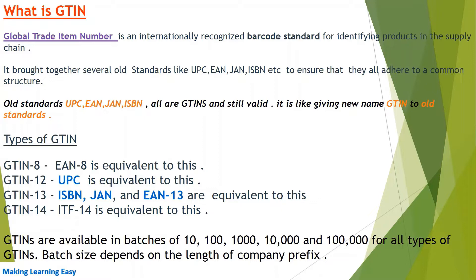It brought together several old systems like UPC, EAN, GEN, ISBN, etc., to ensure that they all adhere to a common structure. This point is important to notice: old standards UPC, EAN, GEN are all GTINs now and still valid. It is like giving a new name, GTIN, to the old standards. Old standards are now part of GTIN and those all are GTINs now.